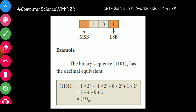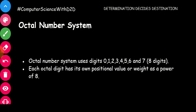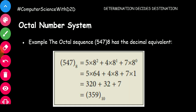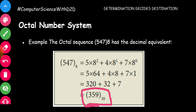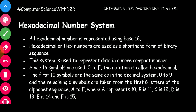This is binary to decimal conversion. For octal, you use digits 0 to 7, and you calculate the powers of 8. Take 547 base 8: 7 × 8⁰ + 4 × 8¹ + 5 × 8² = 7 + 32 + 320 = 359 base 10. So 547 base 8 equals 359 base 10. You can study and apply these conversions.